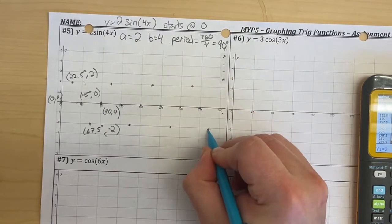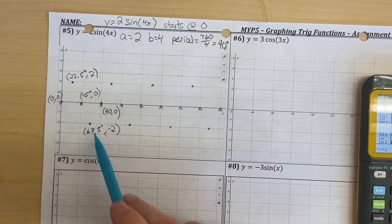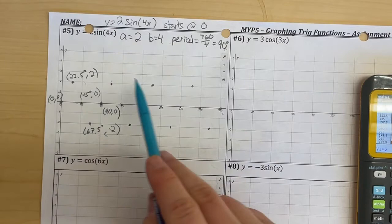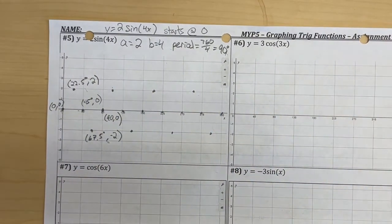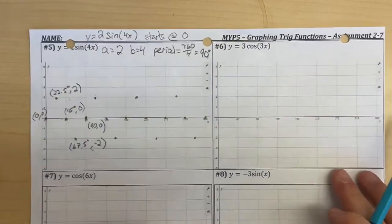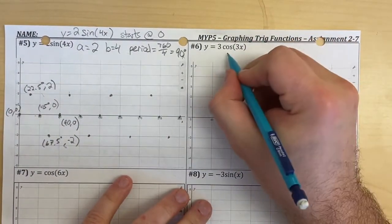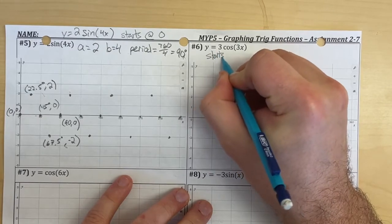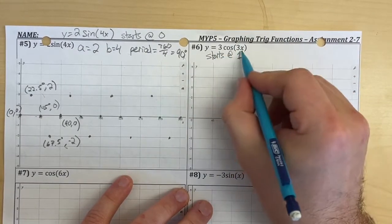It's a lot easier when you're plotting them out and then seeing — notice the pattern, notice how it has 1, 2, 3, 4 peaks from 0 to 360. For number 6, it says y equals 3 times the cosine of 3x, so cosine starts at 1. So we do 1 times 3, meaning our start and end value is going to be 3.